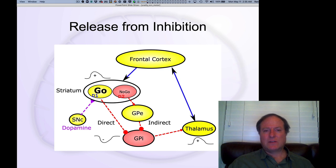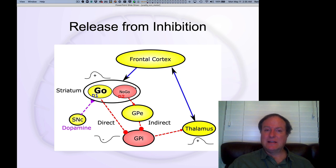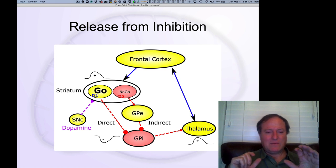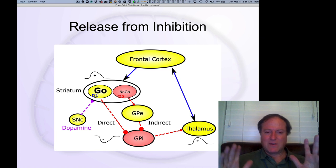So now let's talk about the actual circuit in the basal ganglia — how does it actually work? This is very complicated because of disinhibition, and you have to deal with these minus signs on top of minus signs. And when you start talking about dopamine, it gets even crazier.